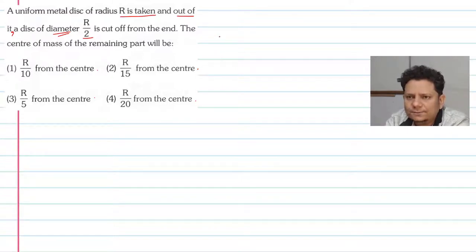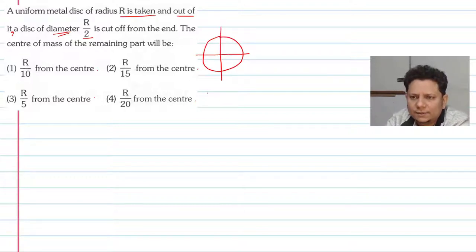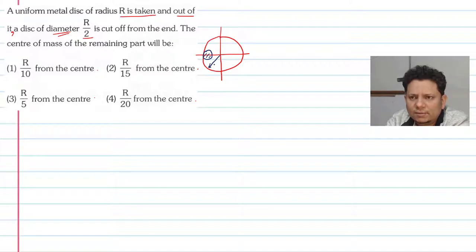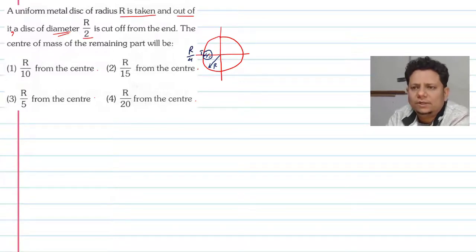What is happening in this case is that we have a disc of radius R, and from it a small disc (cavity) is cut. The radius of the cut disc is R/4, because the diameter is R/2, so the radius is R/4.